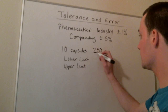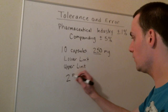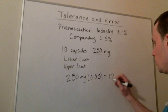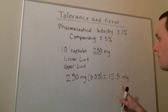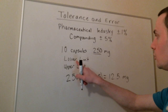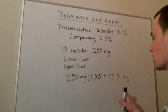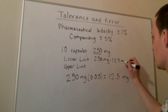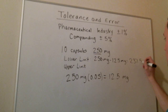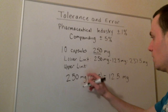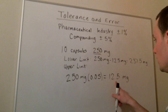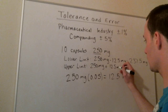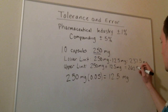250 times 5% is equal to 12.5 milligrams. So our lower limit is 250 milligrams minus 12.5 milligrams, which equals 237.5 milligrams. The upper limit is 250 milligrams plus 12.5 milligrams, which equals 262.5 milligrams.